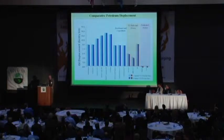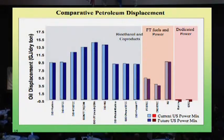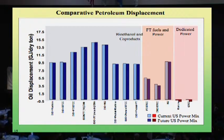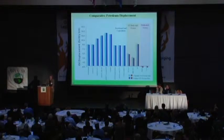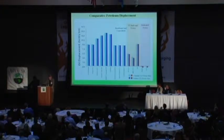If you look at a different objective — petroleum displacement — it turns out that we essentially use no petroleum in this country to make power. So you're really not going to have any effect on petroleum displacement if you make only power. The liquid fuel options that include a biological step give you the greatest petroleum displacement on a per-ton basis.